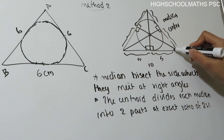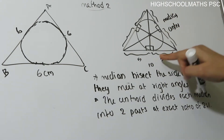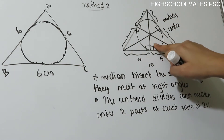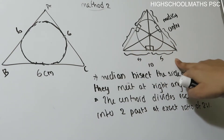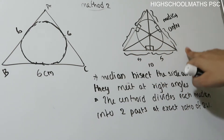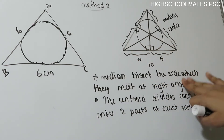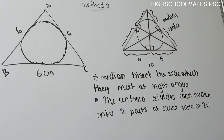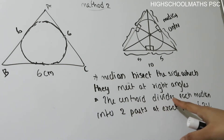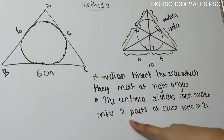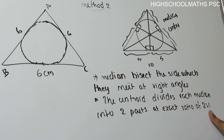If we move to the opposite side of the equilateral triangle, we have a right angle at the equilateral triangle. Now, we use this method. Here is the third method: the centroid divides each median into two parts in the ratio of 2 to 1.